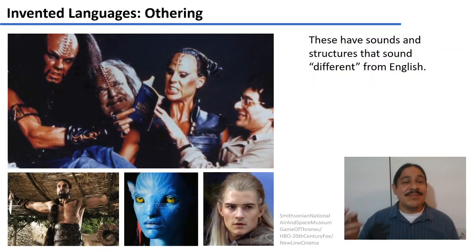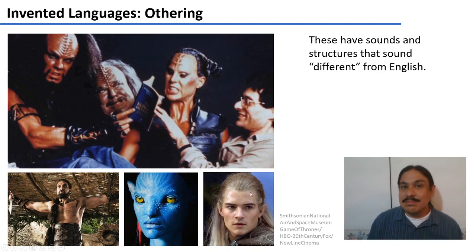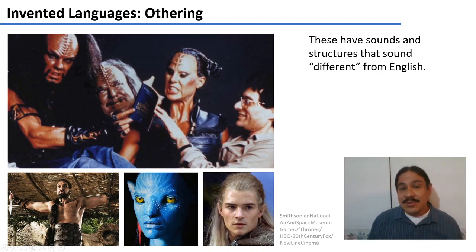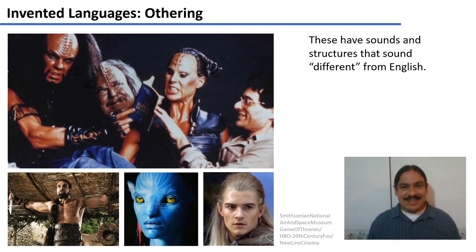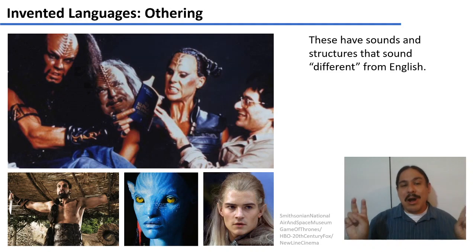These languages are made to sound different from English. We saw an example with Elvish in the previous video, from the Tolkien books and movies. Na'vi from Avatar was made similarly. Marc Okrand is the linguist who invented Klingon, and he was asked to come up with something that sounded harsh. So he made a language with a lot of sounds pronounced with the back part of the throat, like 'kh,' because he thought that would sound harsh — which is also kind of how Dothraki sounds.